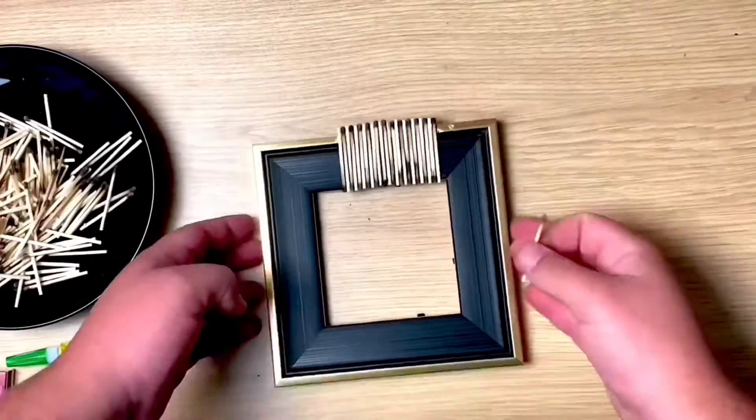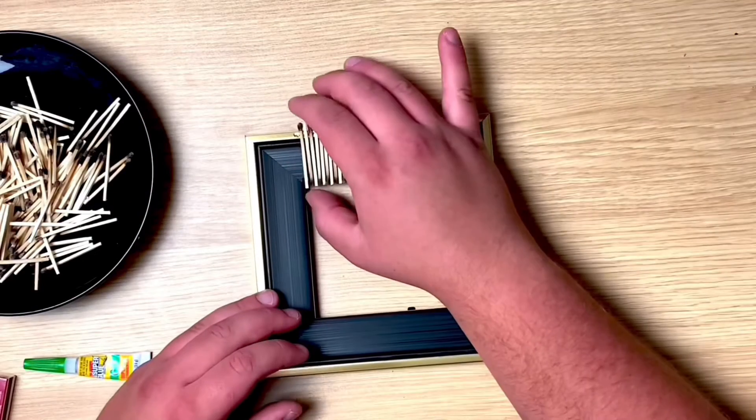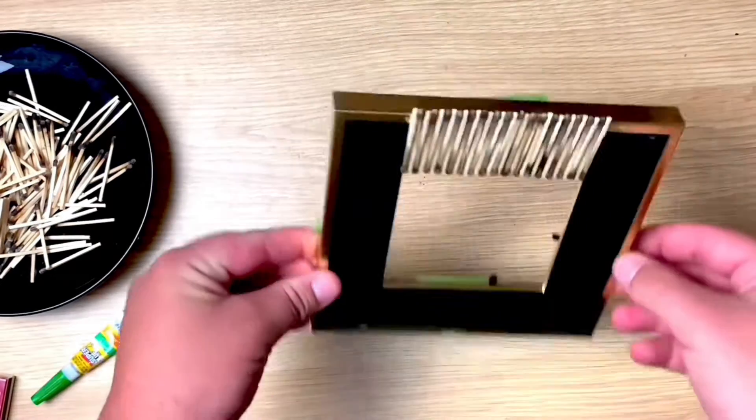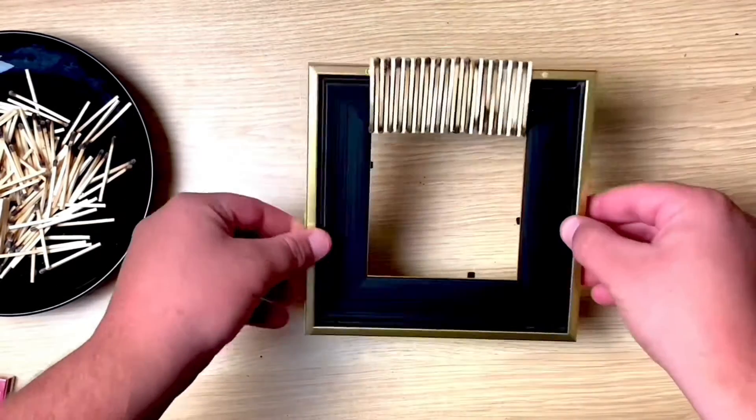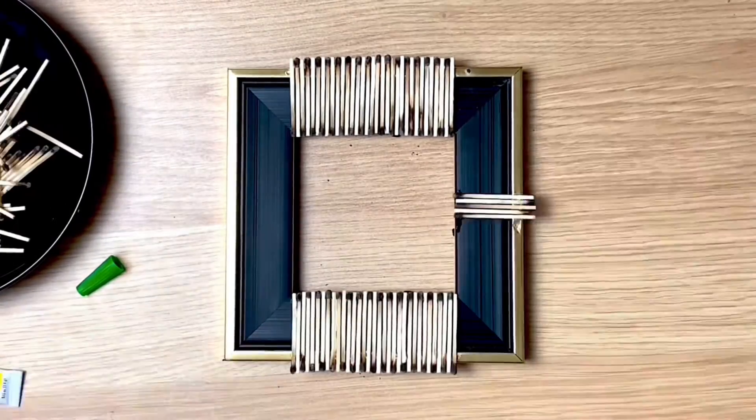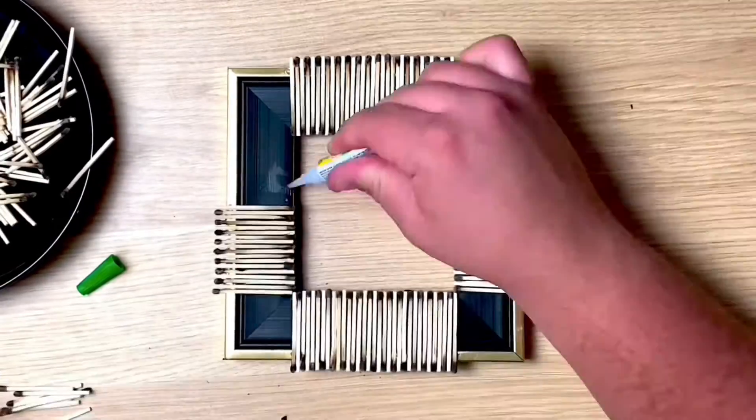This super glue that I bought is super glue gel, which is more forgiving than normal super glue. I was able to place the matches down and then readjust them because the glue didn't dry so fast, which was really nice.